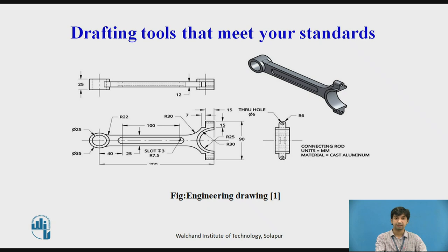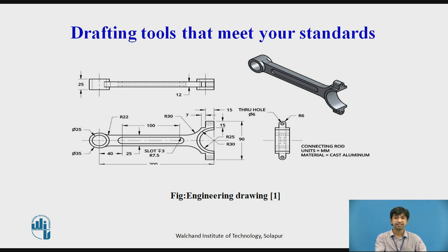Drafting tools that meet your standards: even though you will be designing in 3D, your suppliers and factory workers will need drawings. A clear drawing shows information that isn't obvious in a 3D model — critical dimensions and tolerances, material and surface finish specifications, and notes about processing such as curing or heat treatment. Be sure any 3D CAD system you buy can make drawings to your current standards for dimensions, tolerances, lettering, and parts lists. Be sure your drawings can be exported in popular formats such as PDF, DXF, and DWG.